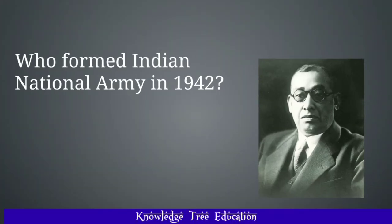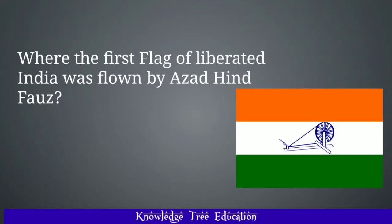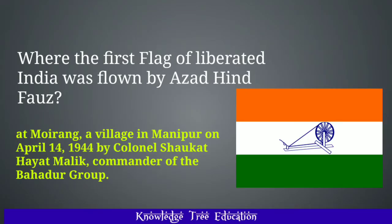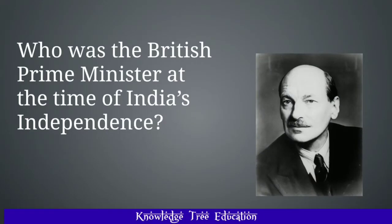Who formed the Indian National Army in 1942? The answer is Rash Behari Bose. Where was the first flag of Liberated India flown by Azad Hind Fauj? The answer is at Moirang, a village in Manipur, on April 14, 1944, by Colonel Shaukat Hayat Malik, commander of the Bahadur Group, Azad Hind Fauj.